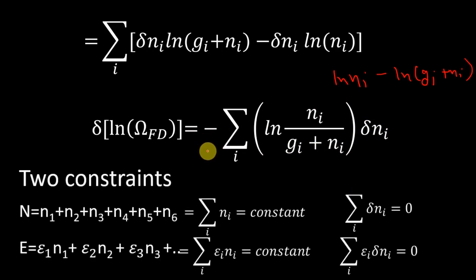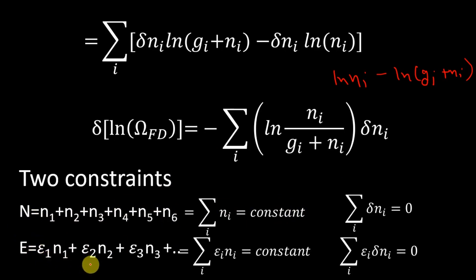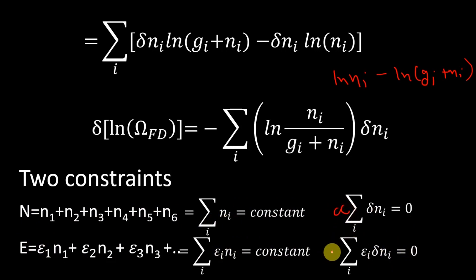We have two constraints: the total number of particles, n_1 + n_2 + n_3 + ..., is constant, meaning its derivative is zero; and the total energy is also constant, so its derivative is also zero. We will multiply these by Lagrange multipliers alpha and beta respectively, and add them in because adding zero does not change the expression — but this helps us handle the different constraints.